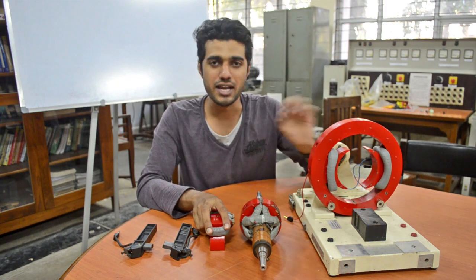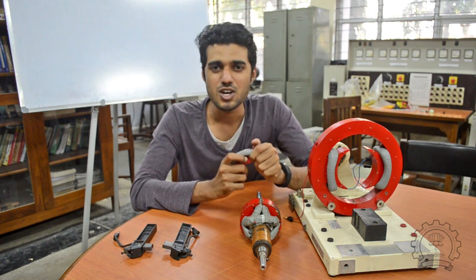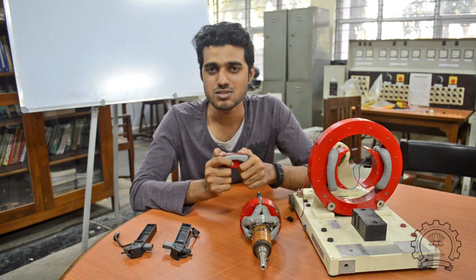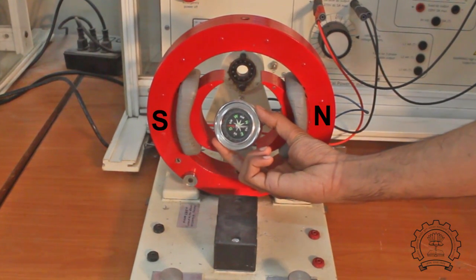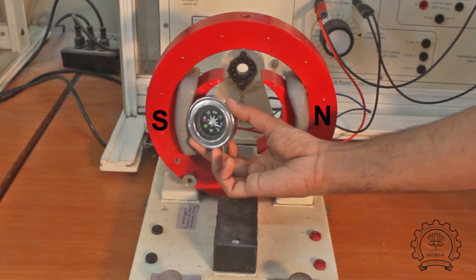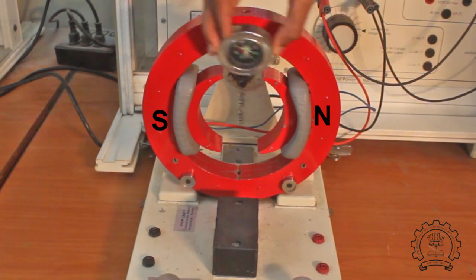For creating the magnetic field, for a small motor permanent magnets are used. But can we use that for large machines? Then what will be the size of the magnets? We can use electromagnets for creating the magnetic field. We will send a current through these coils in opposite direction, such a way that one will be acting as north and another one as south.